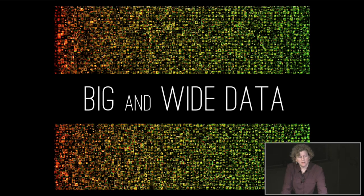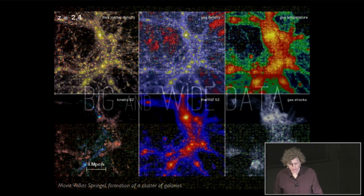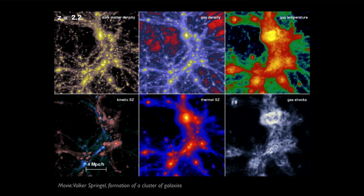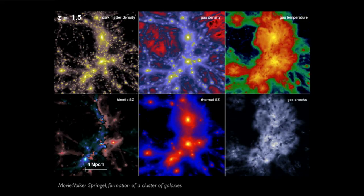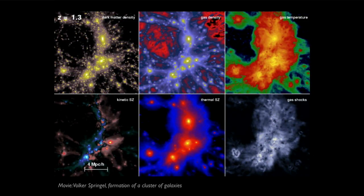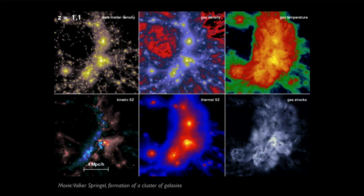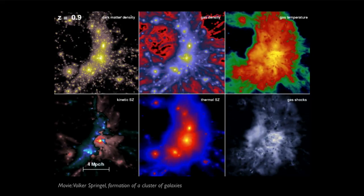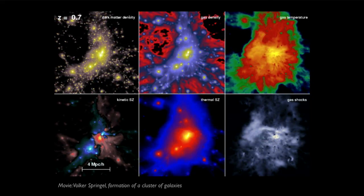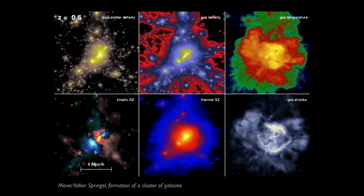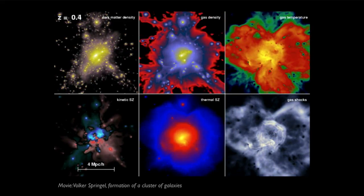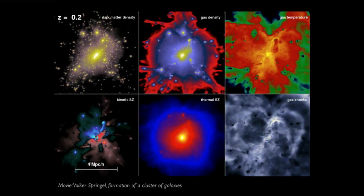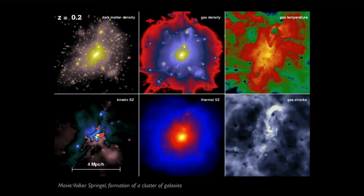I promised I would show you an example of a case where you have big and wide data. We have plenty of theorists and simulators in the audience, so let me choose an example from simulations. These are some movies from Volker Springel where you see many different quantities — dark matter density, shocks, etc. — six different quantities plotted for a simulation of the formation of a cluster of galaxies over time. Normally in visualization you would discourage people from using a different color table in every panel, but here it actually helps you remember which one is which. And you can watch this over and over again and compare one thing to another, but still you'd rather interact with it.